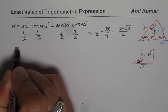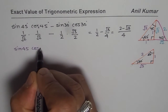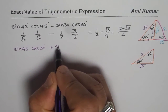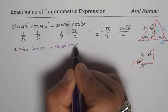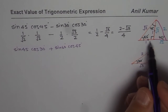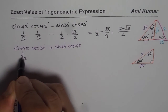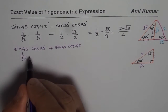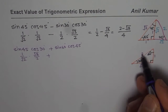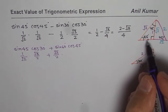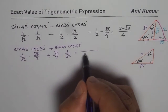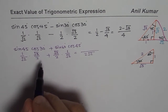Now let's try: sine 45 degrees times cosine 30 degrees, plus sine 60 degrees times cosine 45 degrees. Sine 45 is 1 over square root 2. Cosine 30 is square root 3 over 2. Sine 60 is square root 3 over 2. Cosine 45 is 1 over square root 2.